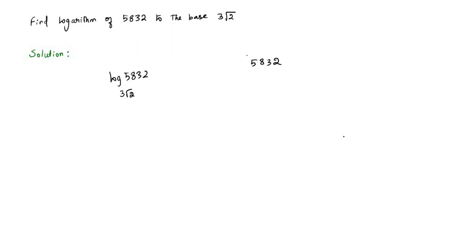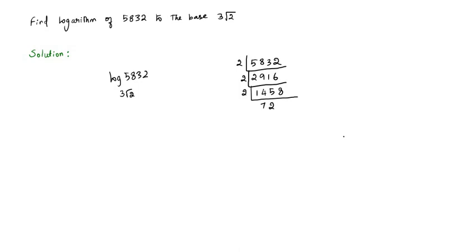5832 is an even number, so we can divide it by 2. When I divide it by 2, I get 2916. Again 2916 is an even number, so I can divide it by 2 — I get 1458. Again 1458 is an even number, so we can divide it by 2, giving us 729.